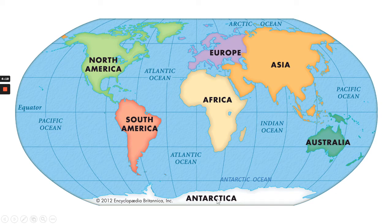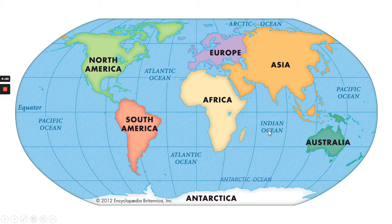Antarctica is a continent because underneath all of this snow, there is actually land. And we have North America and South America. You can see as well, around the continents, there are oceans. We're going to talk about these oceans in a few minutes.